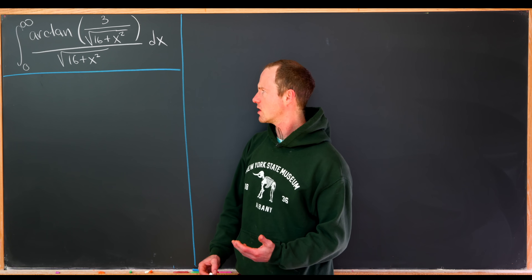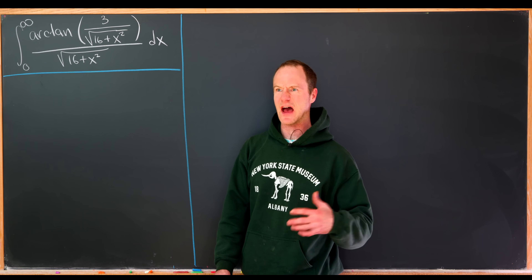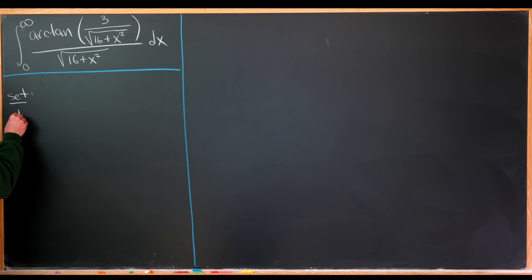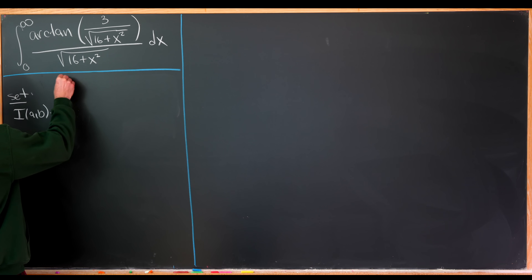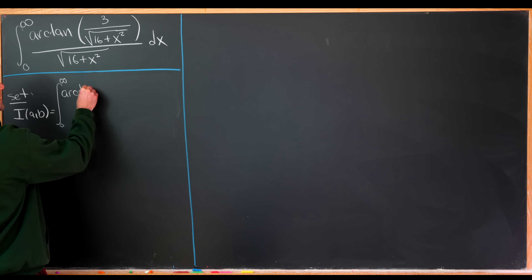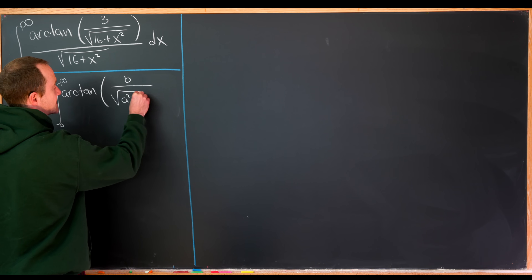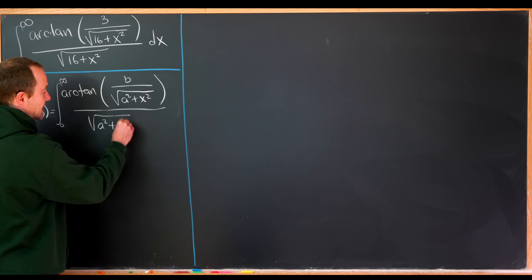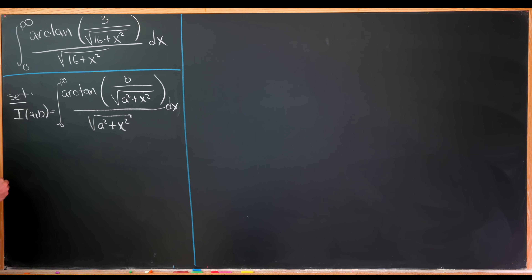We're going to start by seeing this integral as a certain value of a family of integrals. In particular we'll set I(a,b) equal to the integral from zero to infinity of the arctan of b over the square root of a squared plus x squared, all over the square root of a squared plus x squared, dx. This is a clear generalization of our integral.